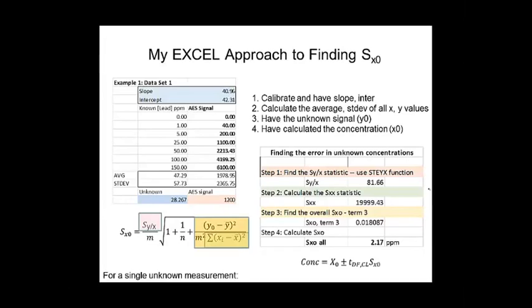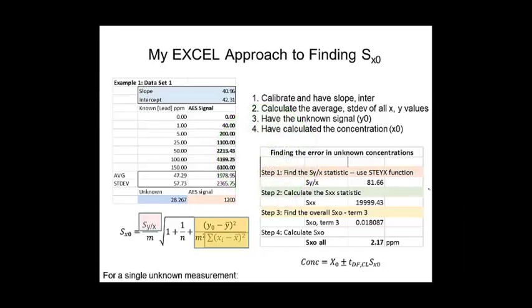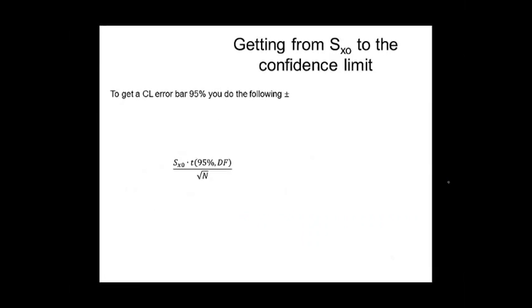So this brings up a really important point, because we know from week one that if we have a standard error or standard deviation, which SX0 is kind of that. The question is, how do I report confidence limits? How do I use that to make an error bar? And you're going to use the same formula we learned before, but in this case, you've got to think about what's N and what's degrees of freedom. So let me go through that. So this is the basic structure that we learned in week one.